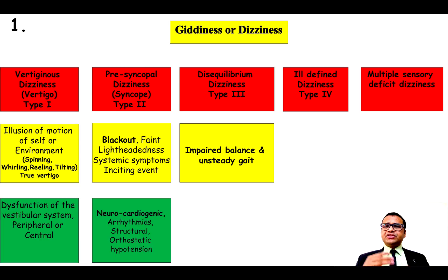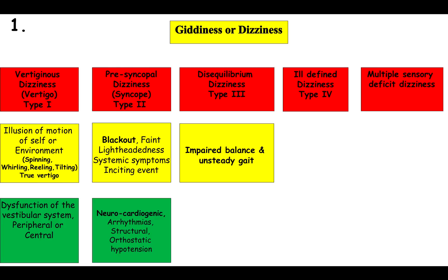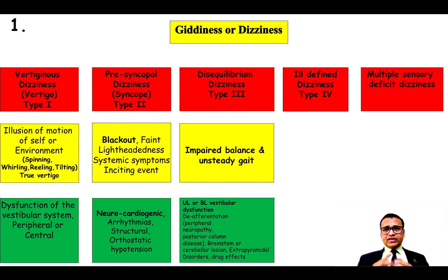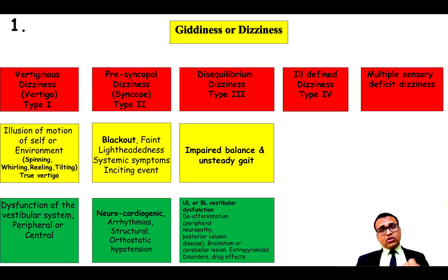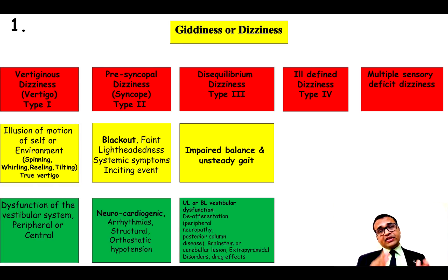In Type 3 dizziness, the patient complains of impaired balance and unsteadiness. The patient might describe it as dizziness, but after digging into the history further, it is actually impaired balance on standing and walking. Dissecting the history of dizziness is very important. Regarding localization, it could be due to unilateral or bilateral vestibular dysfunction, or deafferentation due to proprioceptive loss in large fiber peripheral neuropathy, or compressive or non-compressive cervical myelopathy.